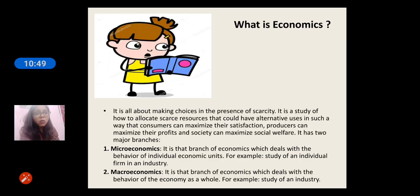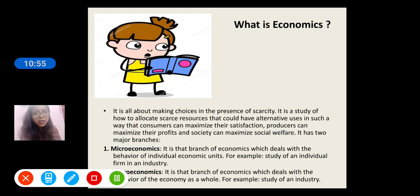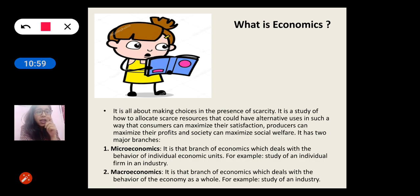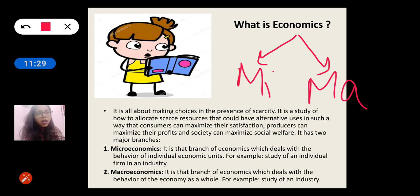So now I can explain what is economics. Economics is all about making choices in the presence of scarcity. It is a study of how to allocate scarce resources in such a way that consumers get satisfaction, producers get profit maximization, and society gets social welfare. So we really need to make choices in the presence of scarcity of resources. To do this, understanding economics is very important. As I have told earlier, economics has two branches, which is micro and macro. Micro talks about individual economic units. Macro talks about economy as a whole.